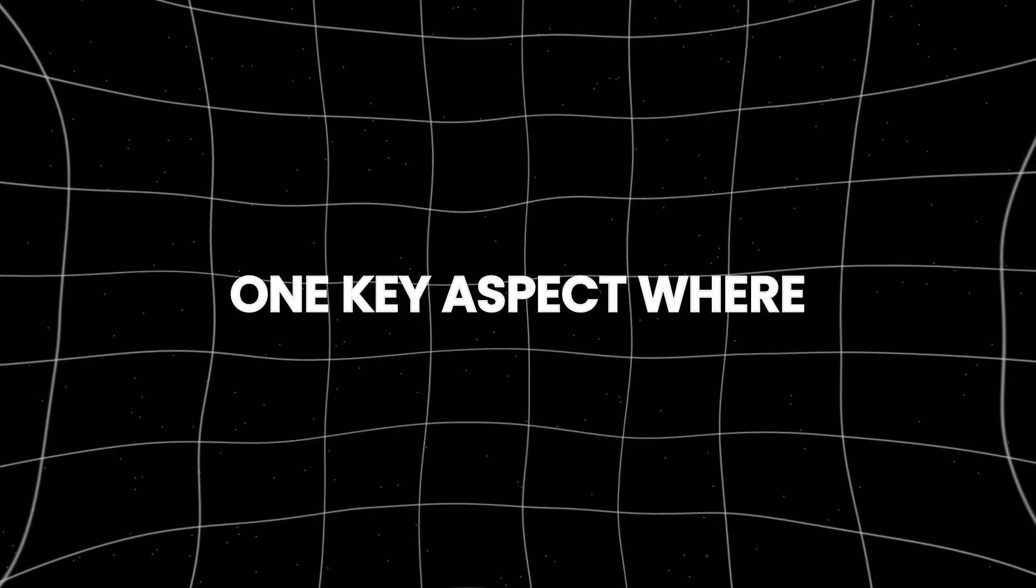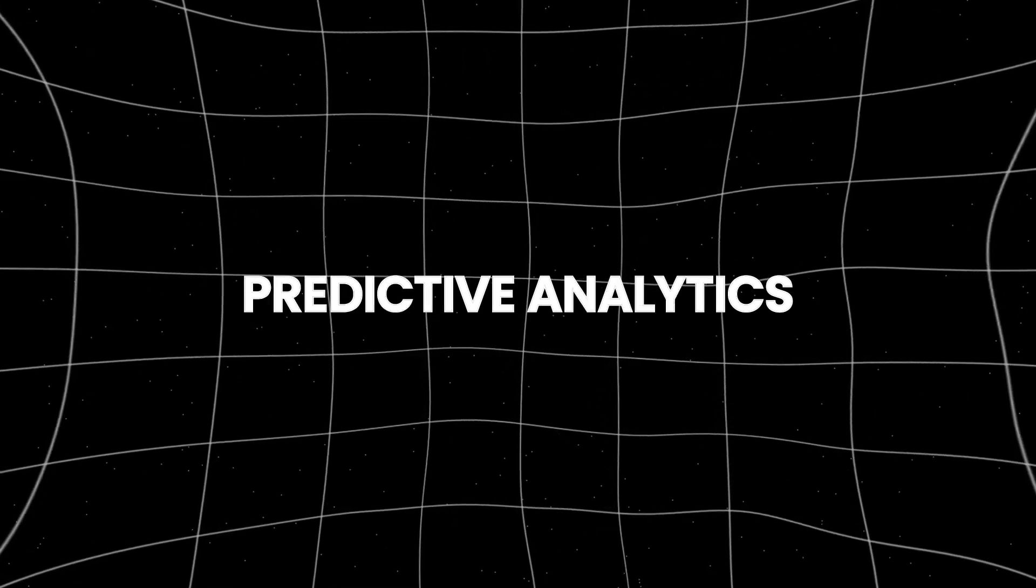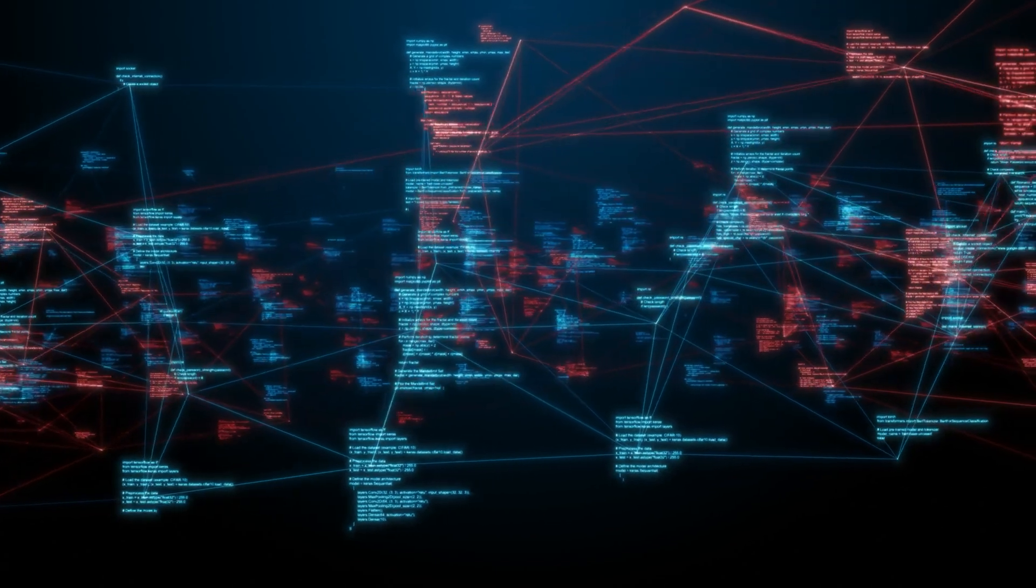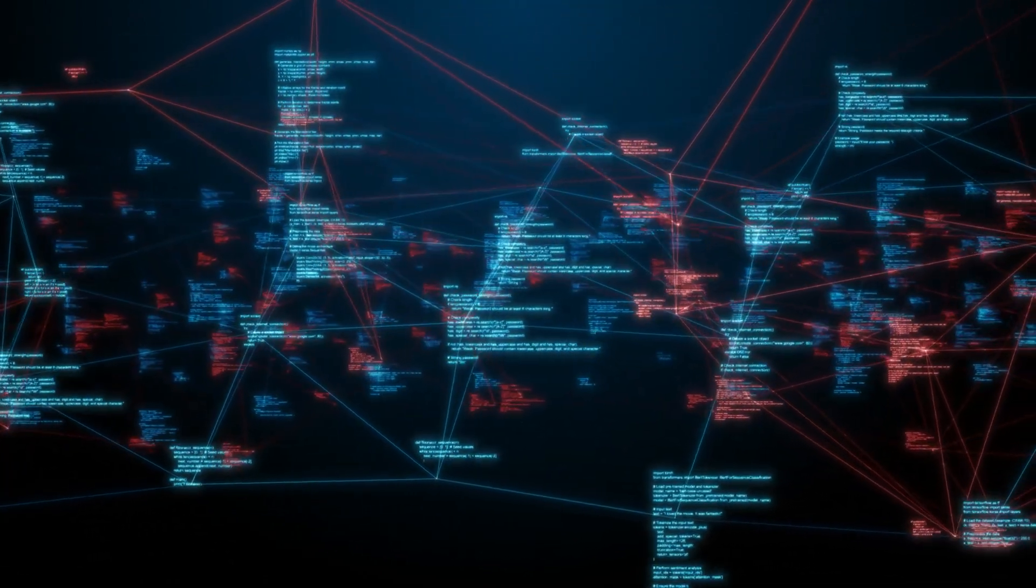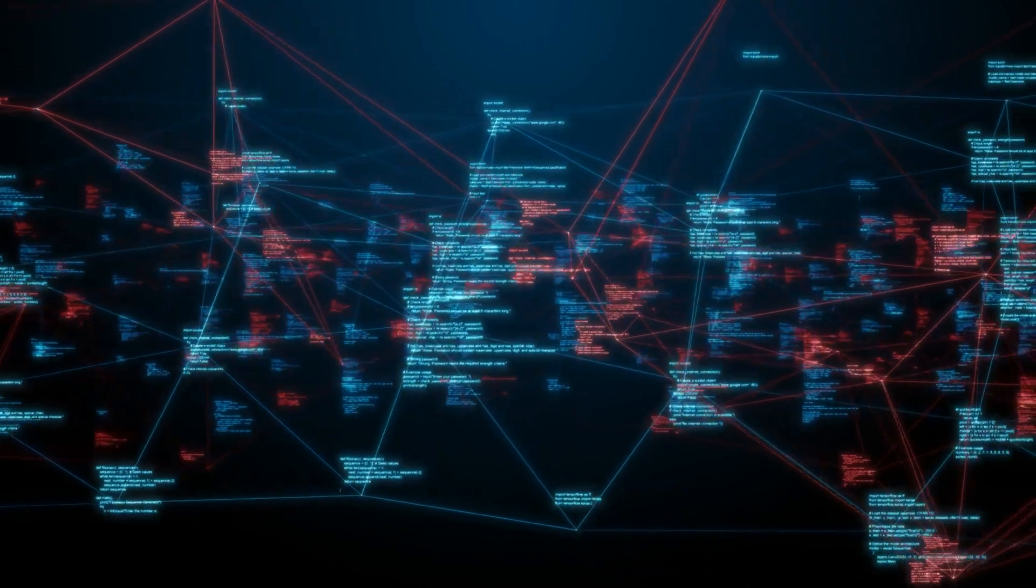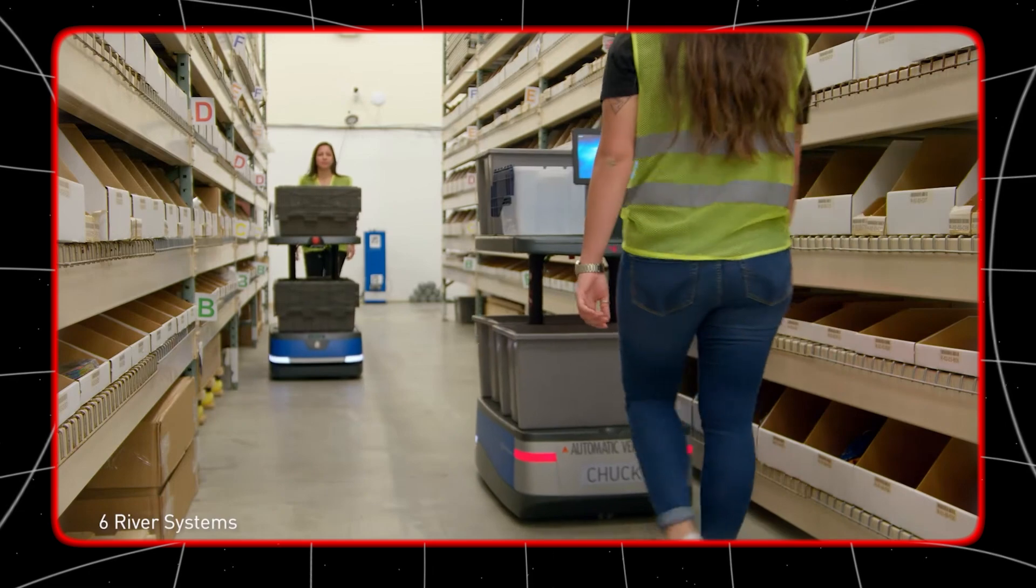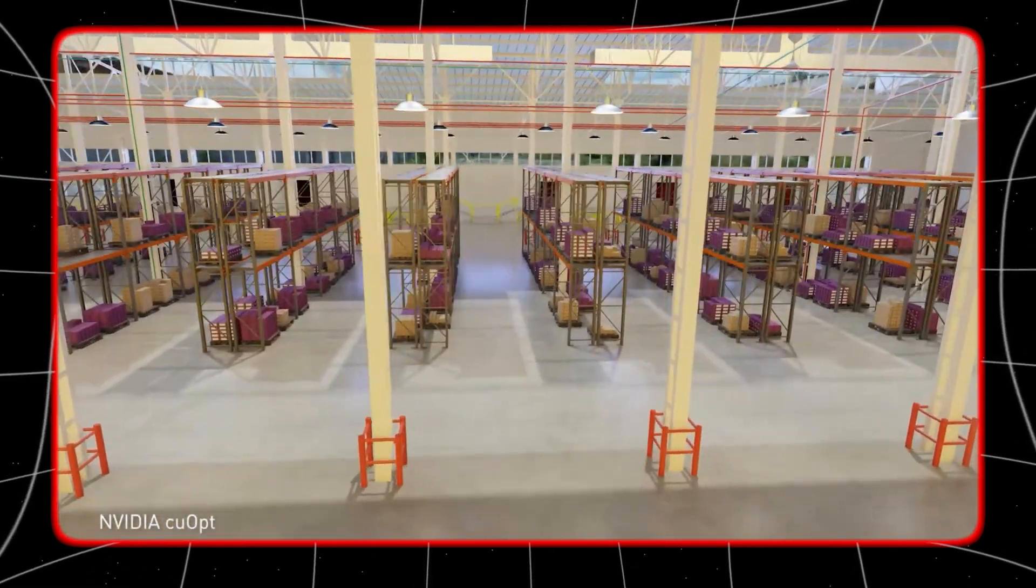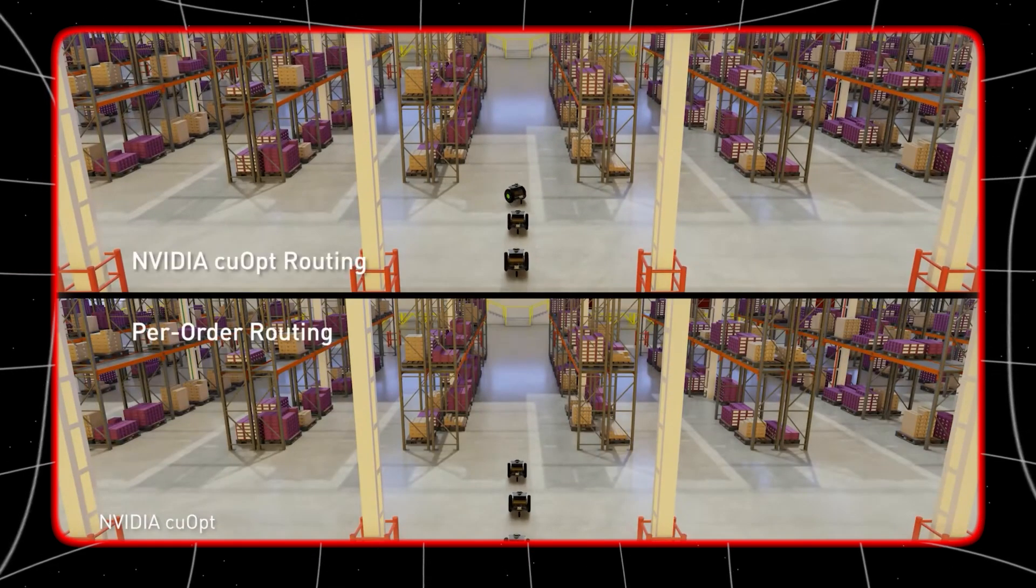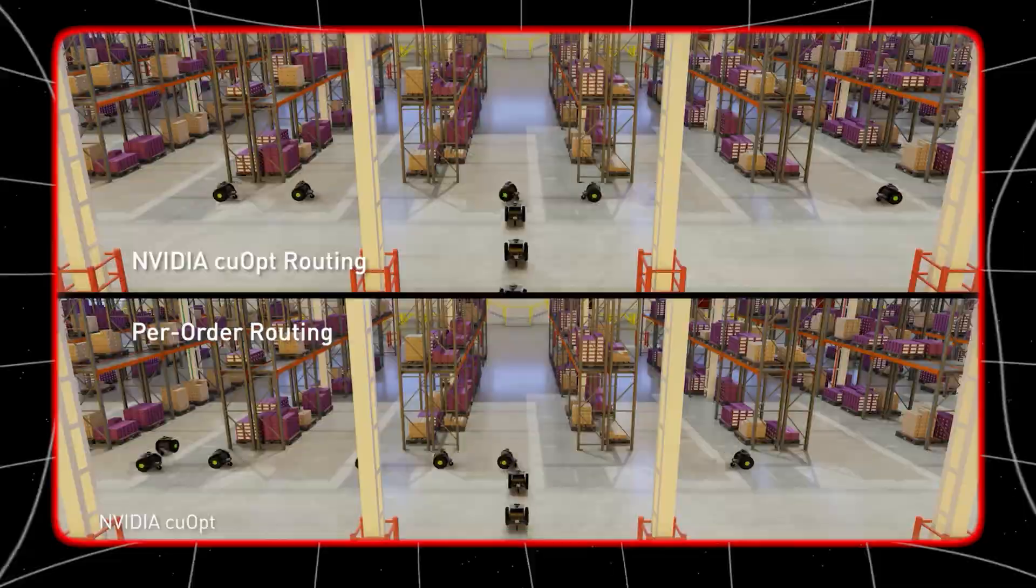One key aspect where quantum-enhanced generative AI excels is in predictive analytics. By analyzing vast amounts of data from various sources such as customer behavior, market trends, and historical sales data, quantum-enhanced generative AI can forecast demand with unprecedented accuracy. This means companies can anticipate customer needs more effectively, reduce excess inventory, and minimize stockouts.